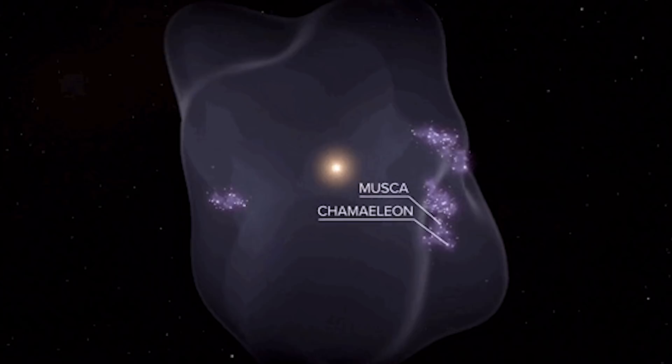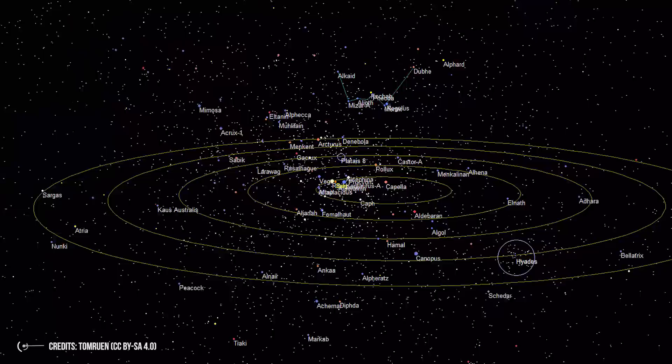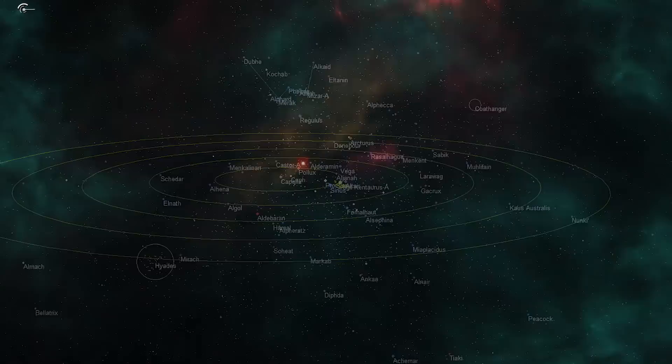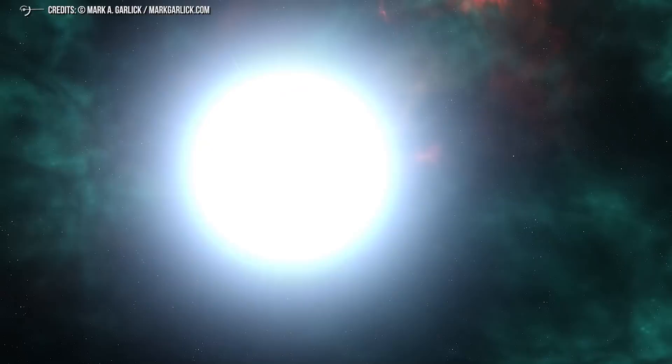But before coming to the study results, I want to explain how we believe such bubbles are created in the universe. Everything starts with a cute star. This star evolves during its life and eventually it's so unlucky to go supernova.